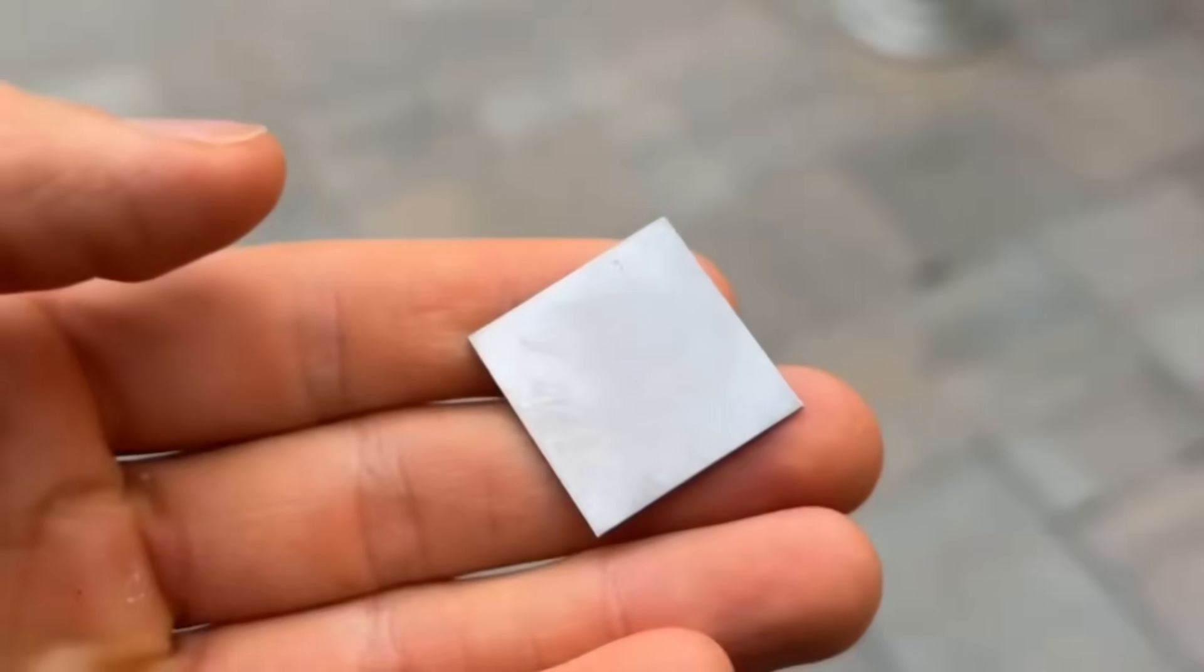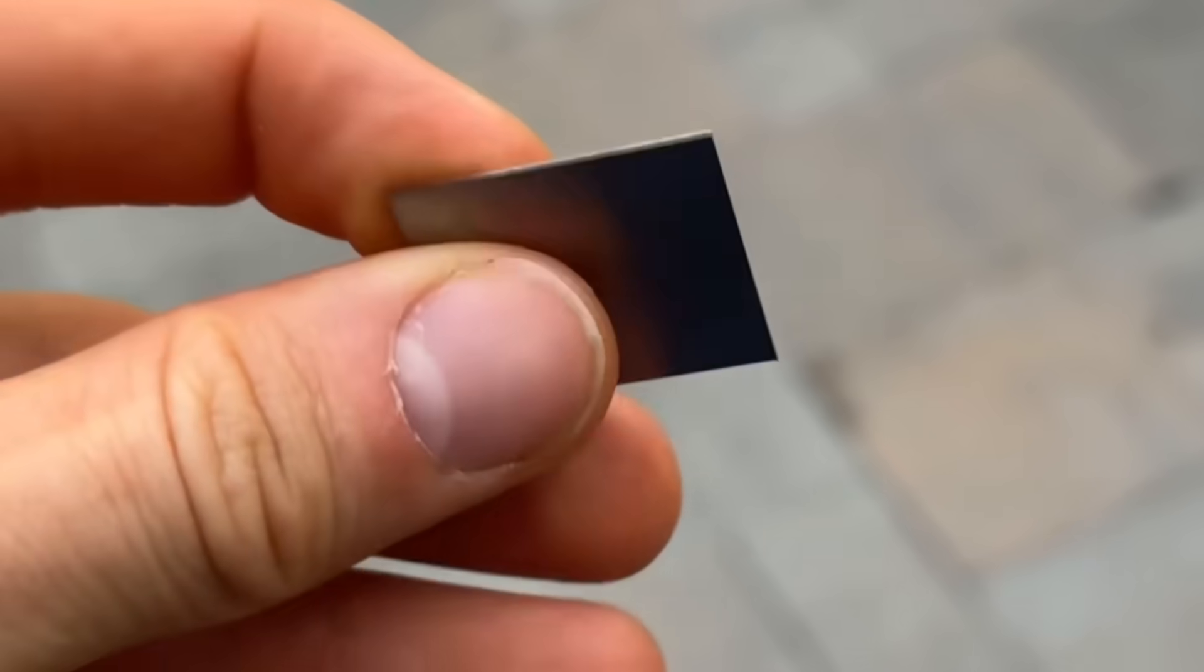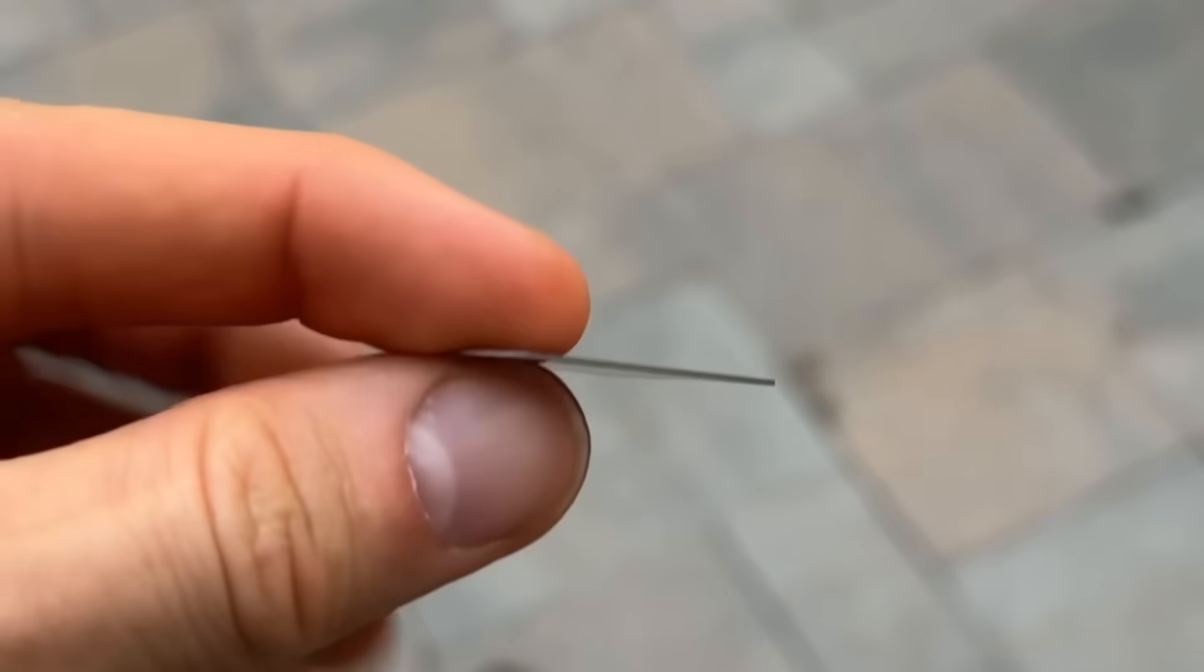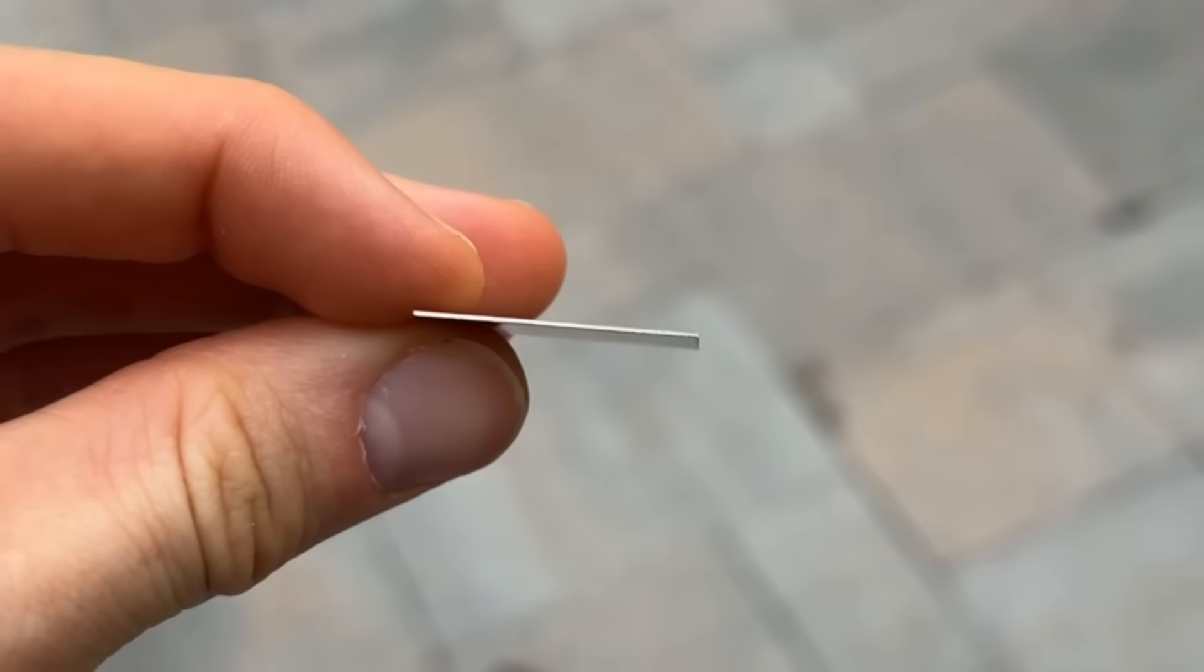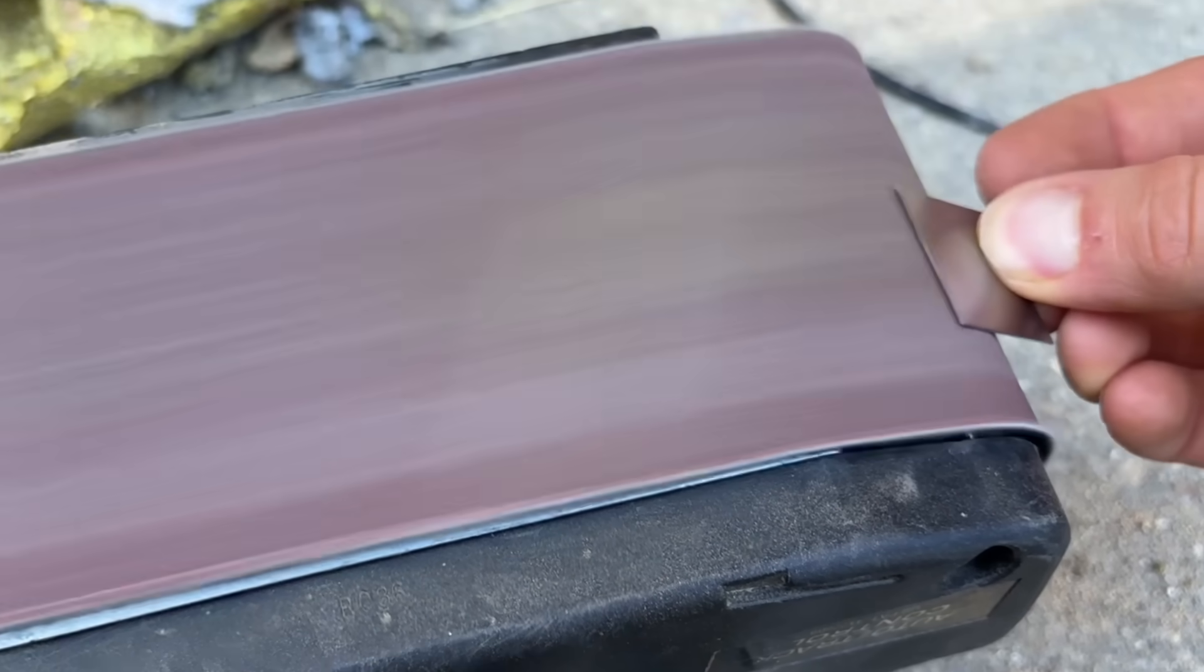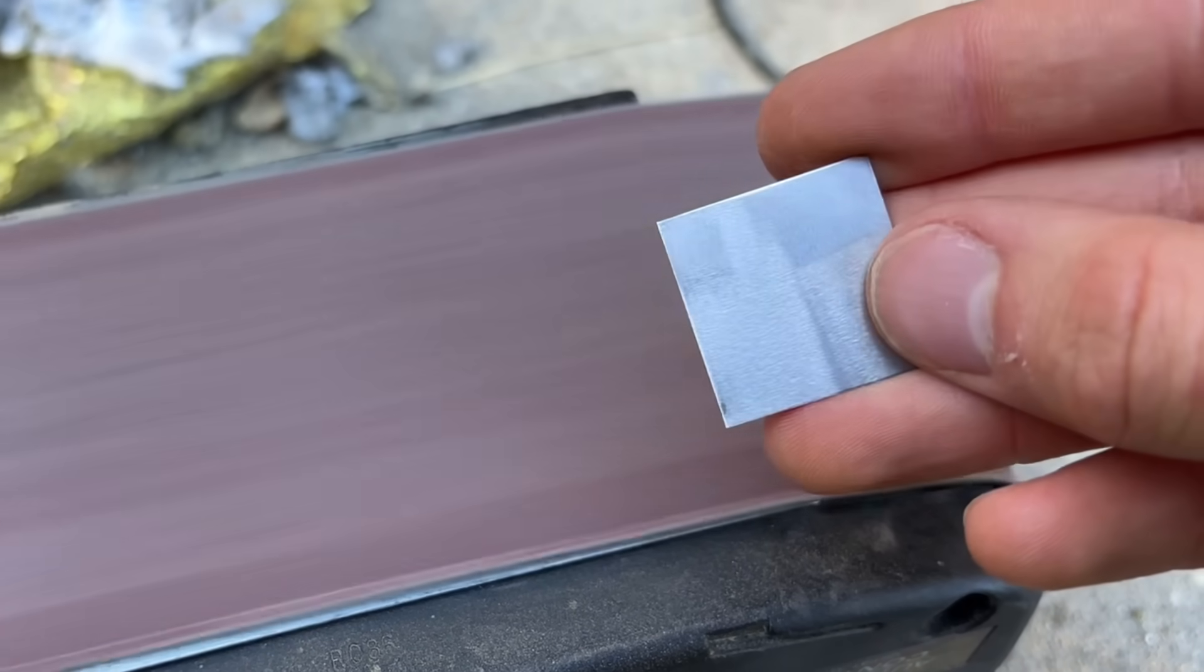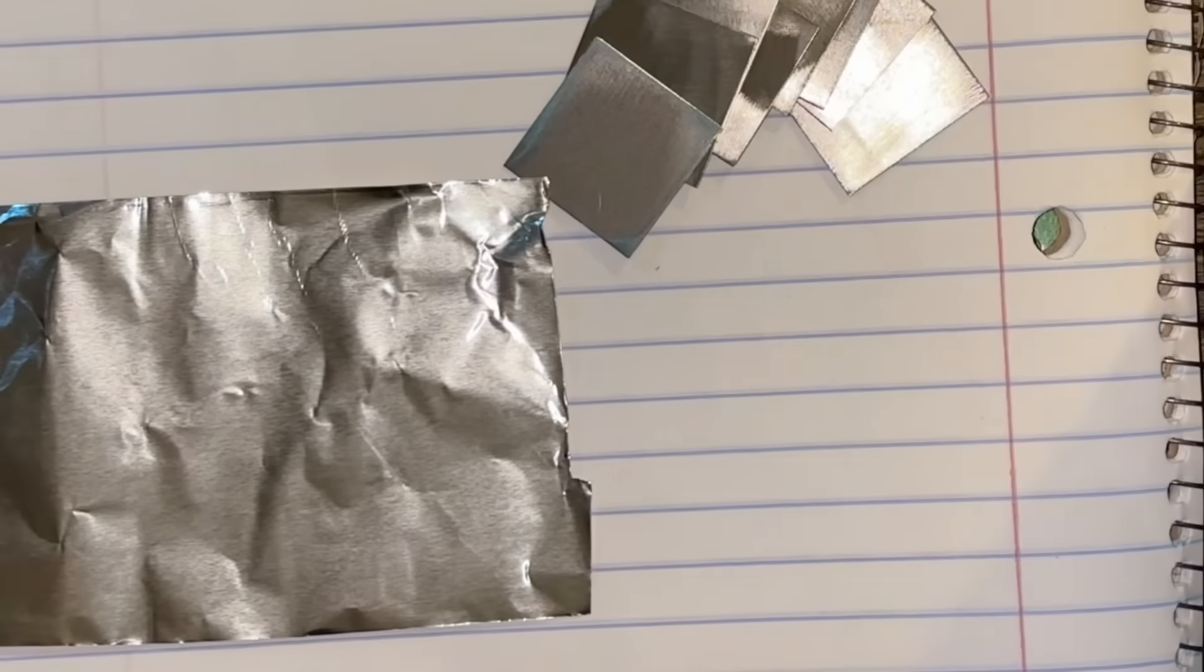First, let's get our initial layup of titanium and aluminum. I have these small titanium panels. These will serve as my titanium layers. And on some of them, I'm going to do a quick sanding to reduce the amount of oxide on the surface. Once I have my panels, I can begin the initial layup.